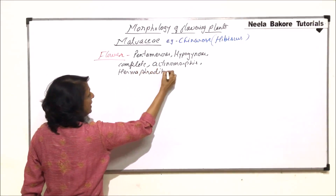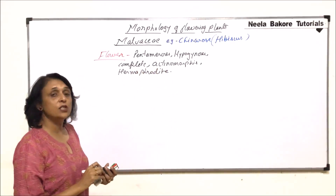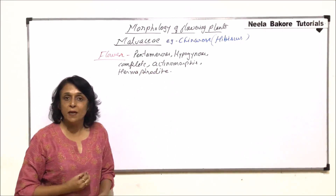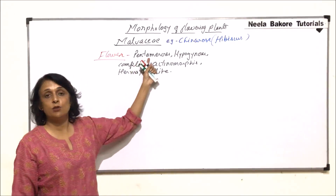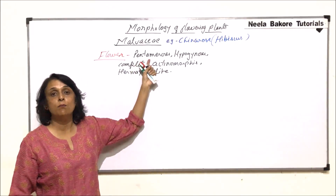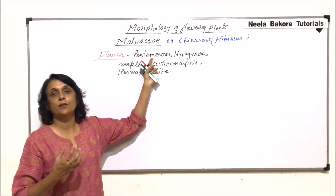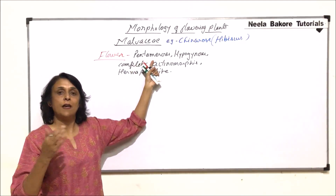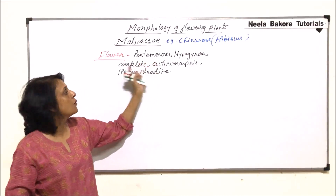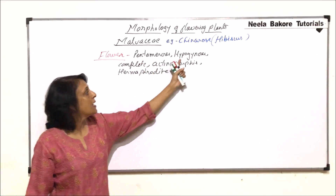We have written only the words — each word gives us information. Pentamerous means every part is in multiples of five, so the number of sepals, petals, and everything is going to be five or a multiple of five — five, ten, fifteen, and so on.